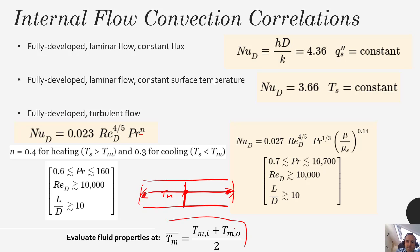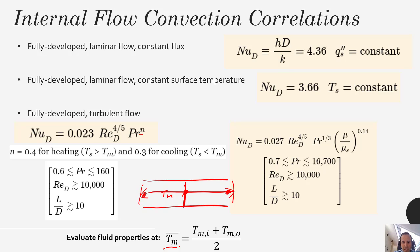For those astute students, you may realize you don't always know the outlet temperature when starting. This implies you'll need to iterate: make an educated guess at the outlet temperature, use it to evaluate the average mean temperature and fluid properties, calculate your Reynolds number, Prandtl number, and Nusselt number, solve the problem, and then calculate the actual outlet temperature. Update your fluid properties based on that result and repeat. It can be tedious, but this is part of the procedure with convection.